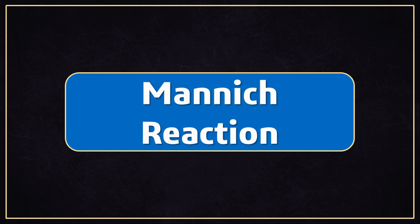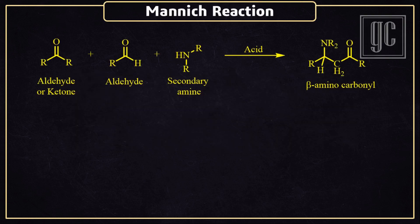In this video, we are going to discuss the Mannich Reaction. This is a condensation reaction in which aldehyde, ketone, and secondary amine react in the presence of acidic conditions, and beta-amino ketones are formed as the final product. Ketones must have alpha hydrogen atoms for the formation of enols, and only secondary amines give this reaction.